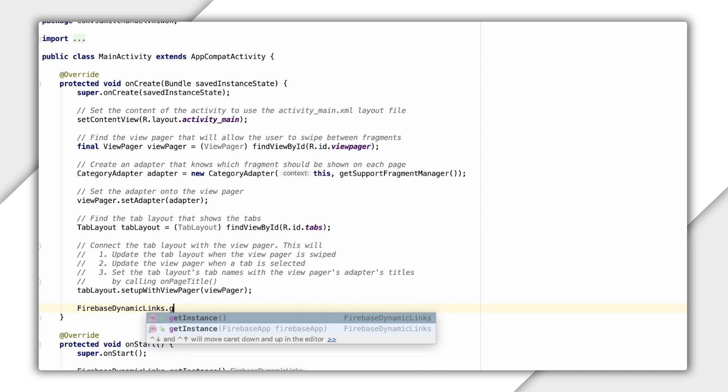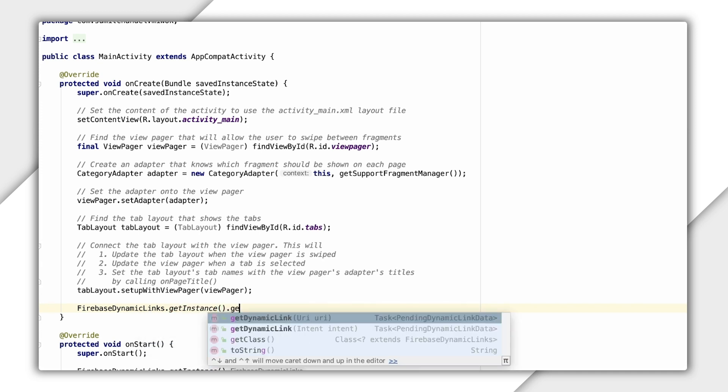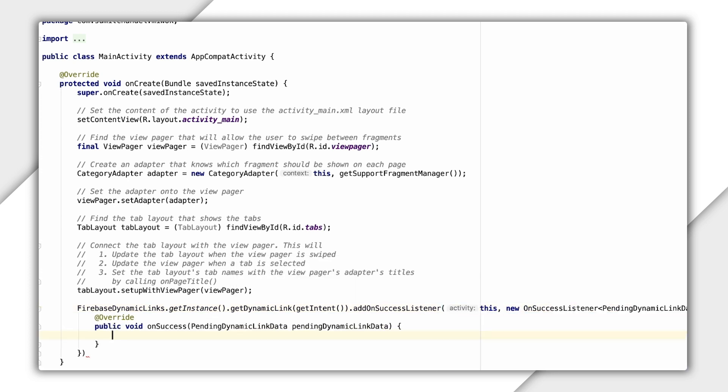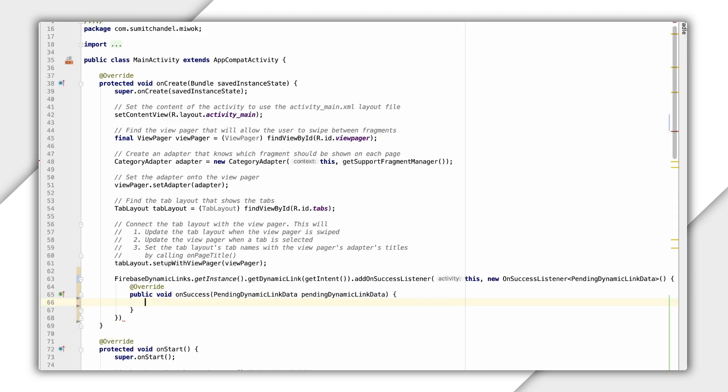So let me type out that method call. It would be FirebaseDynamicLinks.getInstance.getDynamicLink, and to that I'll call getIntent, and then add an onSuccessListener. Now there are a few important things to explain in these calls to understand what's happening before moving on to my link handling code. So let's step through them.